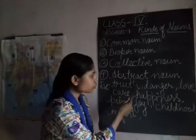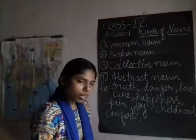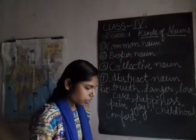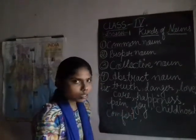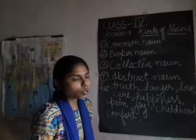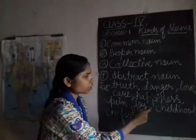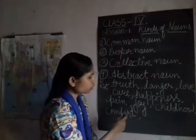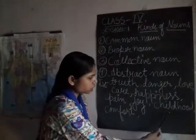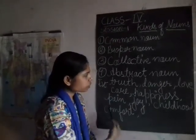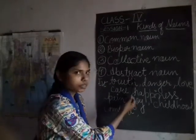Abstract noun refers to the ideas, qualities and conditions of things. These are things which we cannot see, we cannot touch, but we can only feel. Some examples are: truth, danger, love, fear, happiness, pain, joy, childhood, comfort. These are the examples of abstract noun.